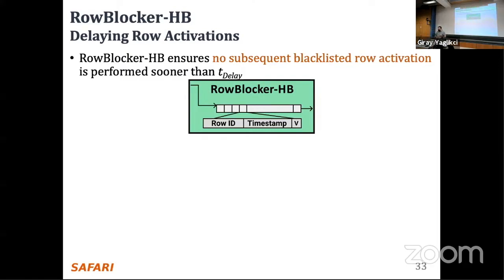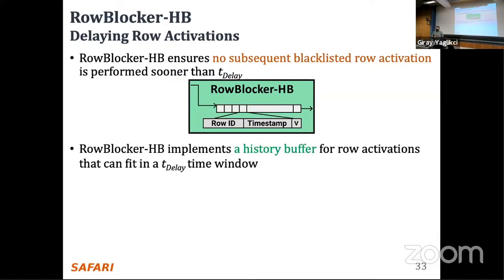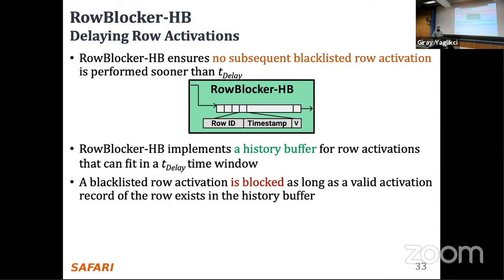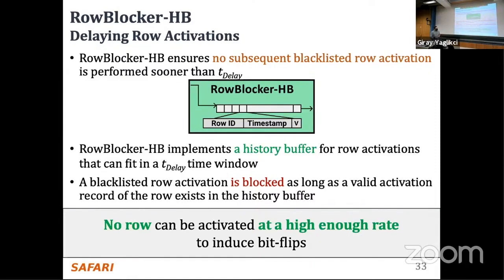Row Blocker HB (history buffer) ensures that no subsequent blacklisted row activations are performed sooner than the T_delay time window. It implements a history buffer containing information about all row activations that can fit in a T_delay time window. A blacklisted row activation is blocked as long as a valid activation record of that row exists in the history buffer. If Row Blocker finds a valid record, it means the row was already activated within the past T_delay window, so it should block this row activation. With this mechanism, no row can be activated at a high enough rate to induce Rowhammer bitflips — we deterministically ensure no row can exceed the threshold.